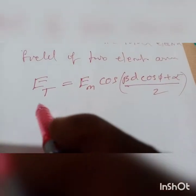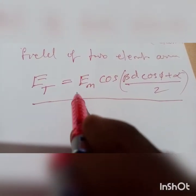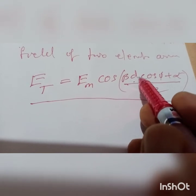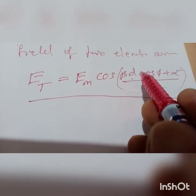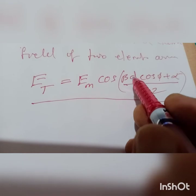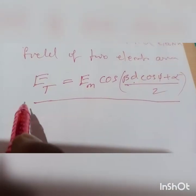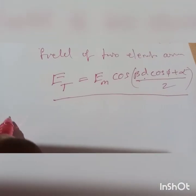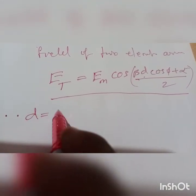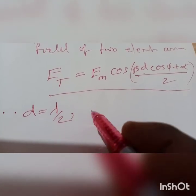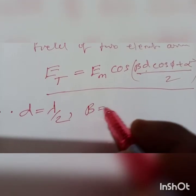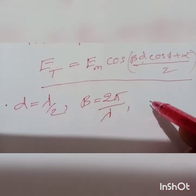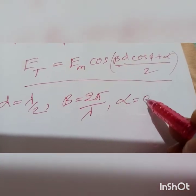Here we are applying different cases by considering distance d as lambda by 2, lambda, 2 lambda, and so on, and based on that we estimate the resultant radiation pattern. Let us consider the first case: d is equal to lambda by 2. We know that beta is equal to 2π/λ, and we are also considering alpha as 0 for this case.